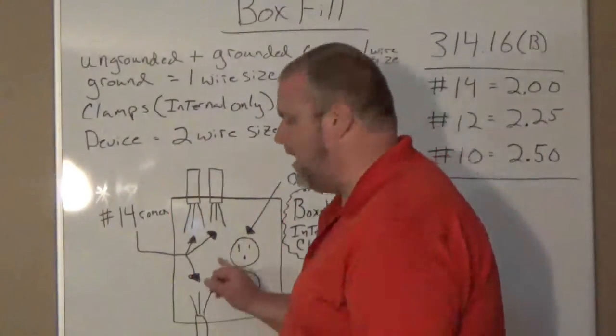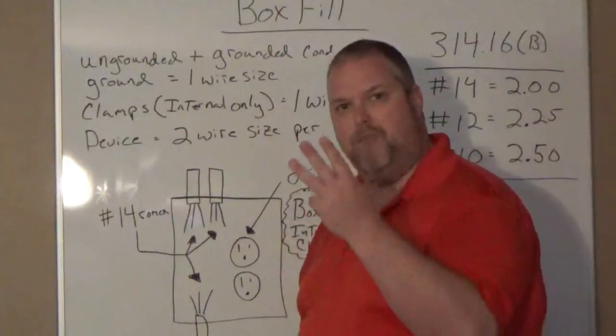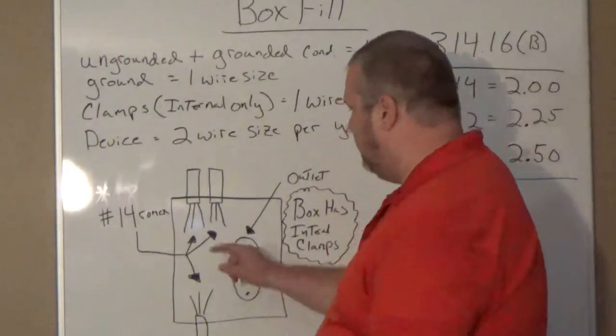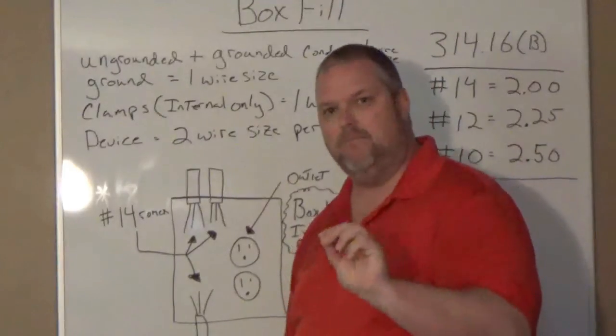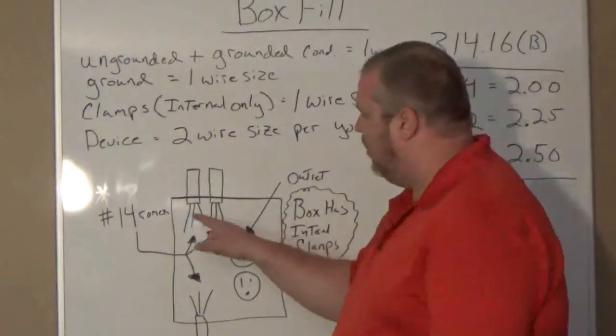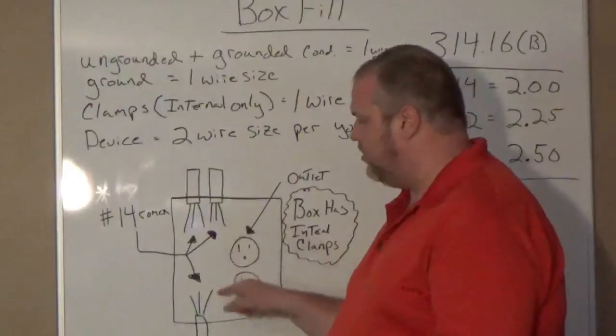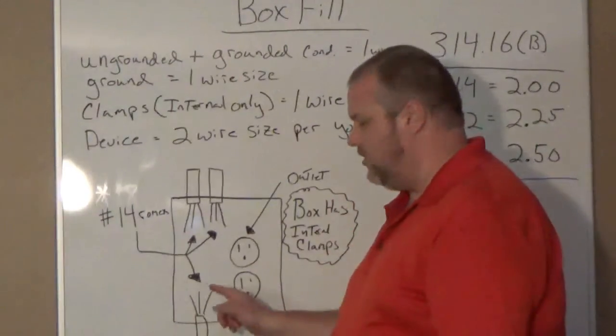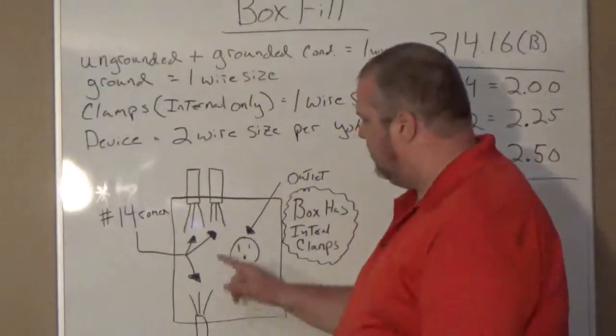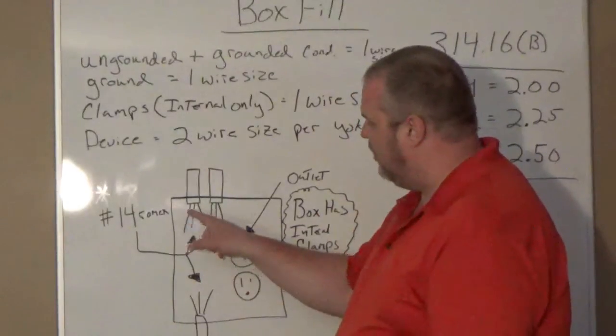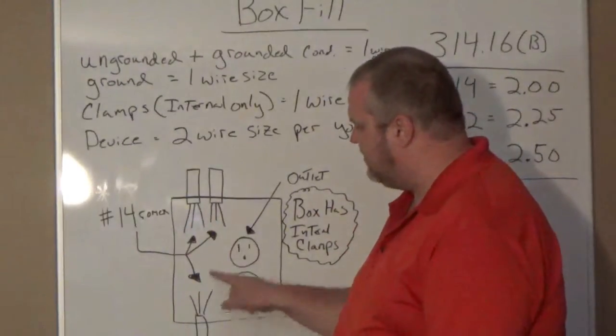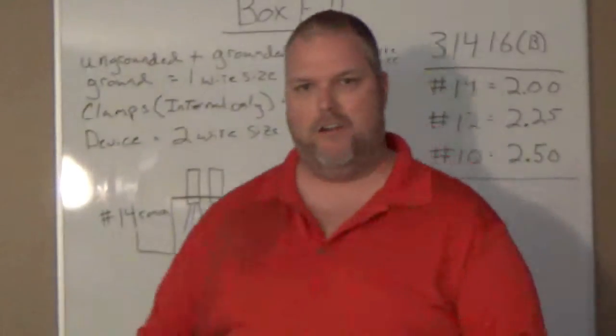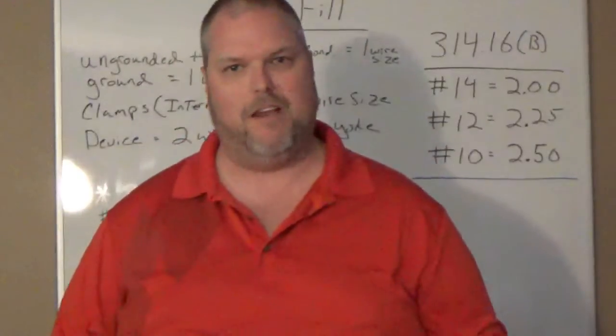Let's count the grounds. We have three grounds, but we're only counting them as one number 14. So now we have seven. The internal clamps are counted as one. The ground is counted as one. So that's going to bring us, we have one, two, three, four, five, six, the ground being seven, the internal clamps being eight.